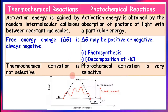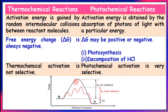In the energy diagram of a thermal reaction, the lower level represents the energy of the reactant molecule, and the upper limit is known as threshold energy. Reactant molecules must reach this threshold energy to be converted into product. The extra energy that must be acquired to reach threshold energy is known as activation energy. In thermal reactions, activation energy is obtained by intermolecular collisions, whereas in photochemical reactions the activation energy is obtained by absorption of light of a particular wavelength.